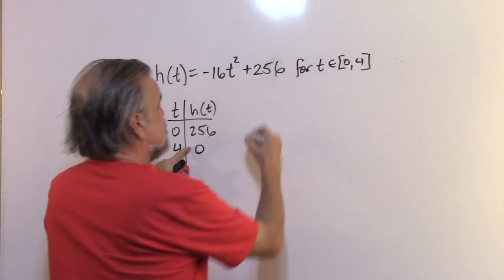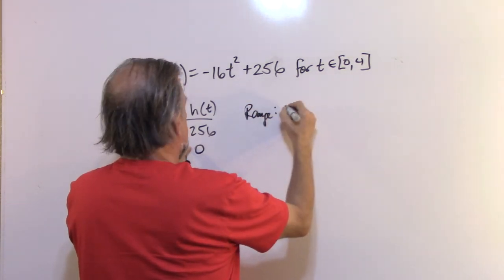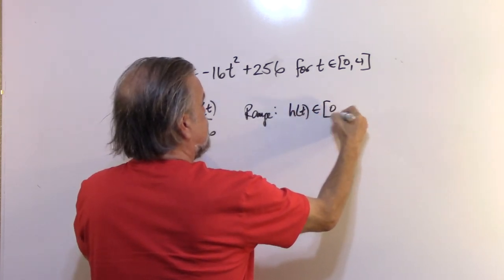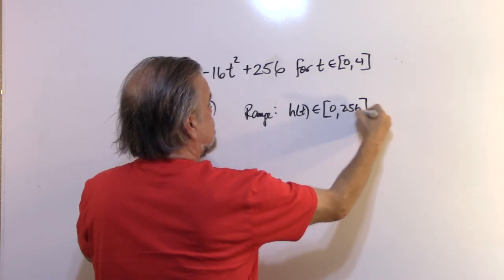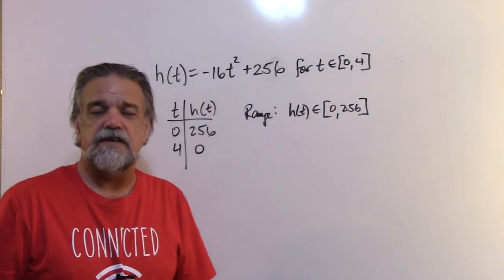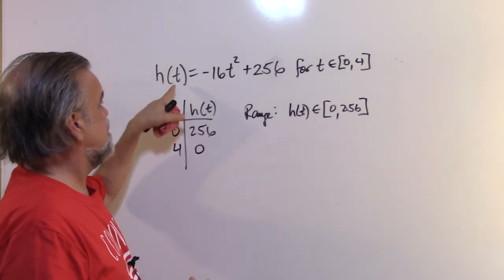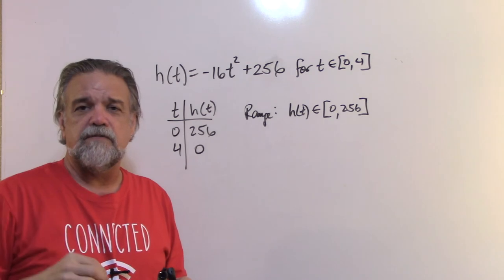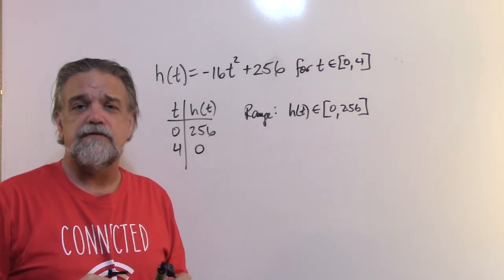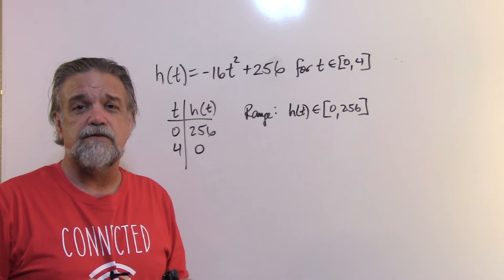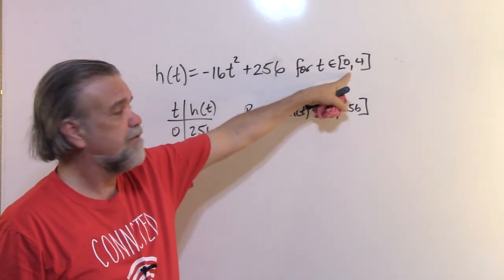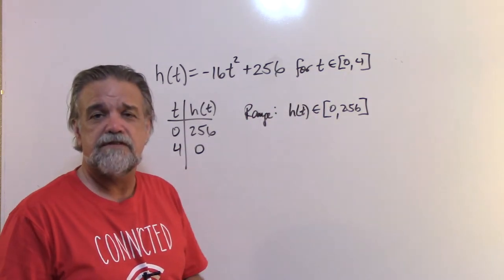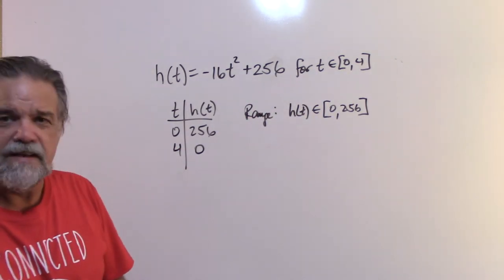Between t = 0 and t = 4, h(t) takes all values between 0 and 256, so the range is 0 ≤ h(t) ≤ 256. This function describes how high a penny is after being dropped from 256 feet — it takes 4 seconds to hit the ground, which is why the domain is restricted to [0, 4]. After t = 4, the physics changes.